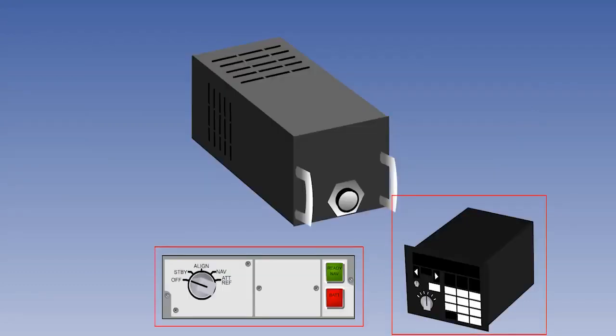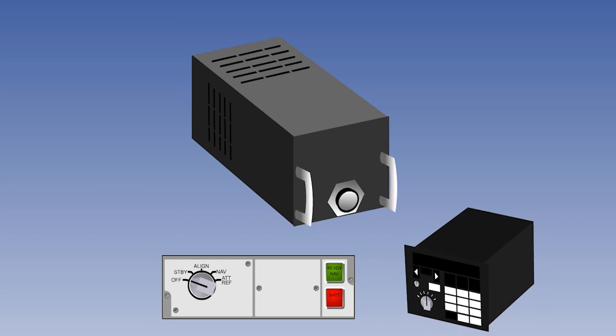There are three basic units in the INS. Two of them are on the flight deck and are operated by the pilot. The third can be remotely located in the aircraft and does not have to be accessed in flight.